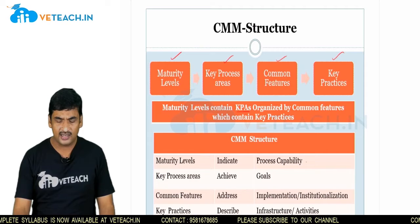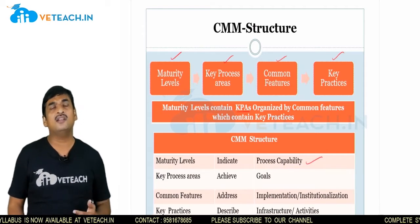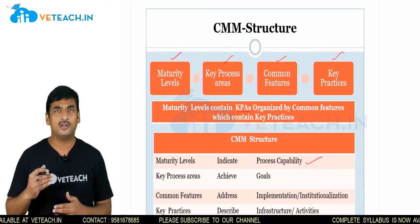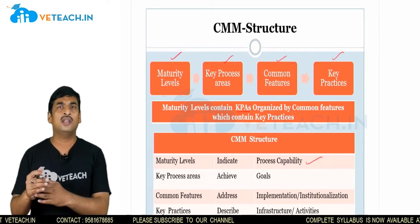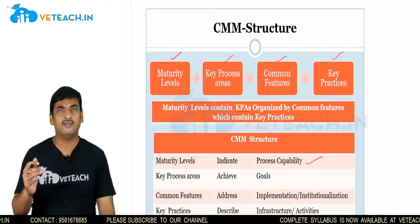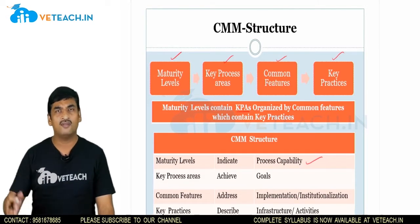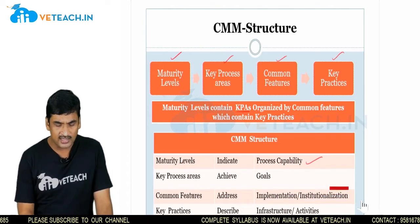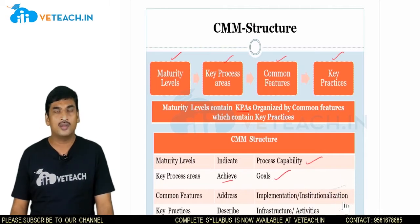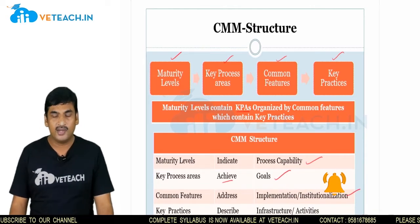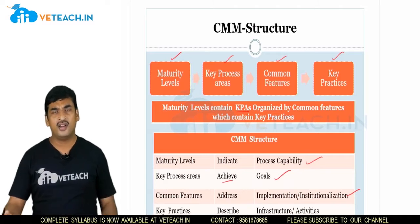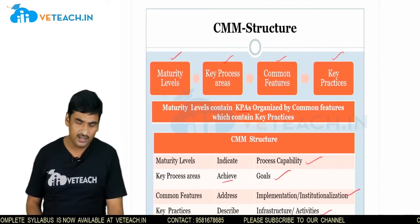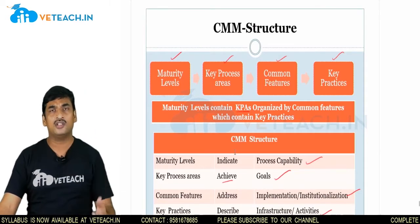The maturity levels indicate process capability. At level one (Initial), the process is chaotic. Level two is more matured than level one, level three more than level two, level four more than level three, and level five is the optimized level where the process itself gets continuously improved. Key process areas achieve goals; common features address implementation and institutionalization; key practices describe activities to be carried out at each level to move up to the next.